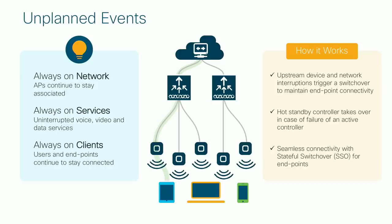For unplanned events, something can happen on your network. When your AP and client database is synced, the states are also synced. This results in an always-on network where APs continue to stay up and running. Always-on services — voice, video, and data — stay up because we've synced the database and the state.